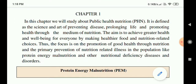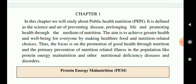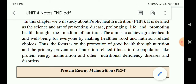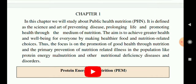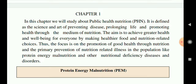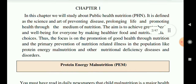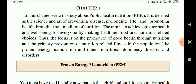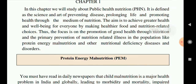Public health nutrition is defined as a science and art of preventing diseases, prolonging life, and promoting health through the medium of nutrition. The aim is to achieve greater health and well-being for everyone by making healthier food and nutrition-related choices easier. The focus is on promotion of good health through nutrition and primary prevention of nutrition-related illnesses in the population, like protein energy malnutrition and nutritional deficiency diseases.